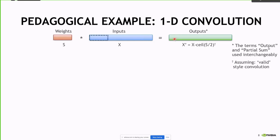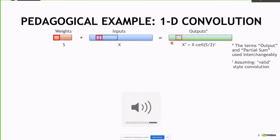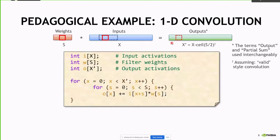You overlay the weights over the inputs, and that produces one output. Then we see the next thing will contribute to the same output. Once we have enough information, we slide the window and do it again, producing the second output. But that idea, even by itself, had some ordering assumption.